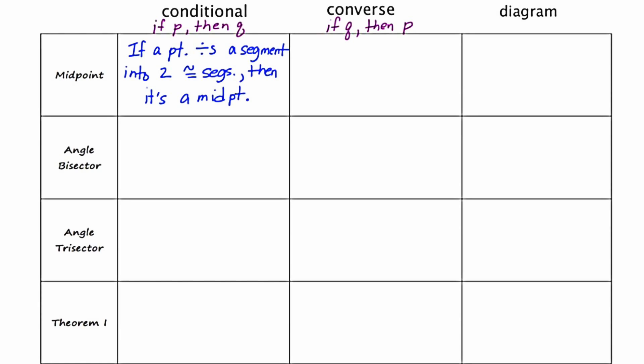Like the other slide, I'm going to identify the hypothesis — the P — using green. Those are all the words after the word 'if.' And I'm going to highlight the conclusion in orange, which are the words after the word 'then.' Now I'm going to formulate the converse, which reverses the hypothesis and the conclusion: if a point is a midpoint, then it divides the segment into two congruent segments.